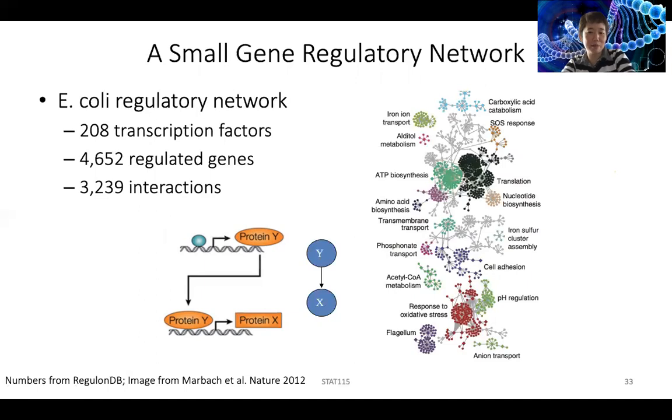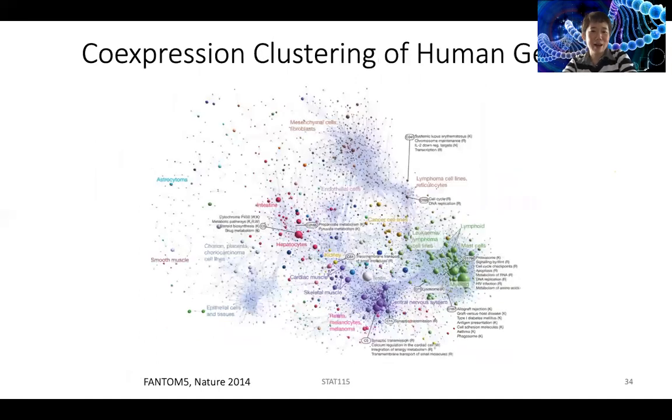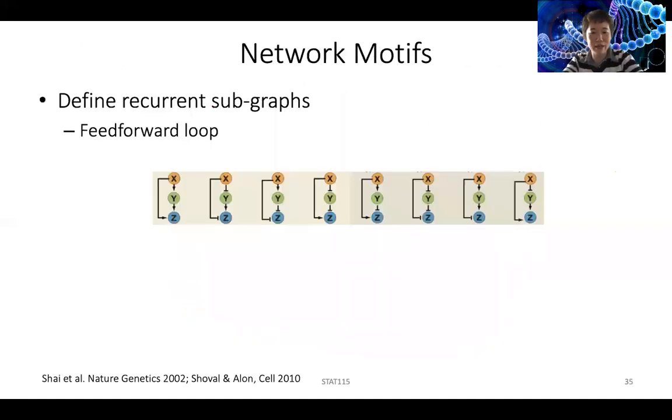But if you look at human gene regulation, this is from a recent paper based on their knowledge. You can already see first of all human has a lot more transcription factors, a lot more genes, and also their interactions are much more complicated. When they look at how based on ChIP-seq data you want to see what kind of regulation happen, there are different types of what they call network motifs, how they regulate each other.